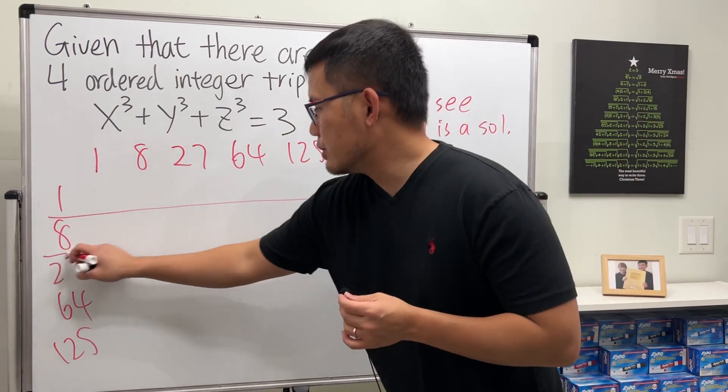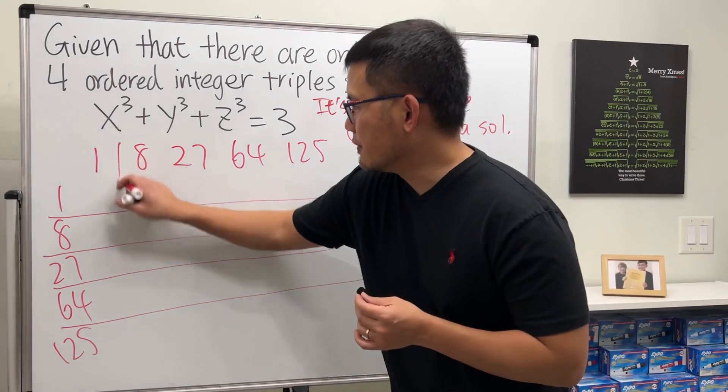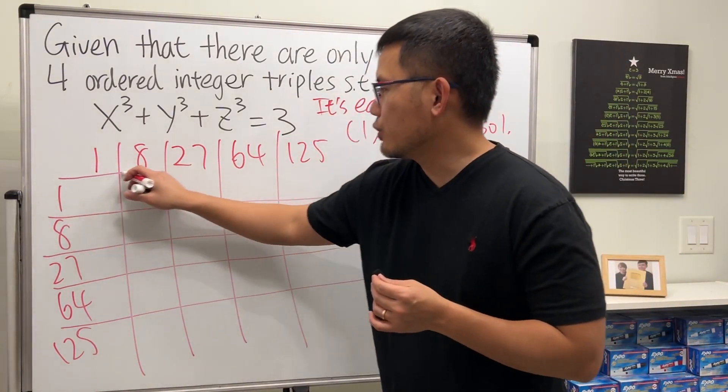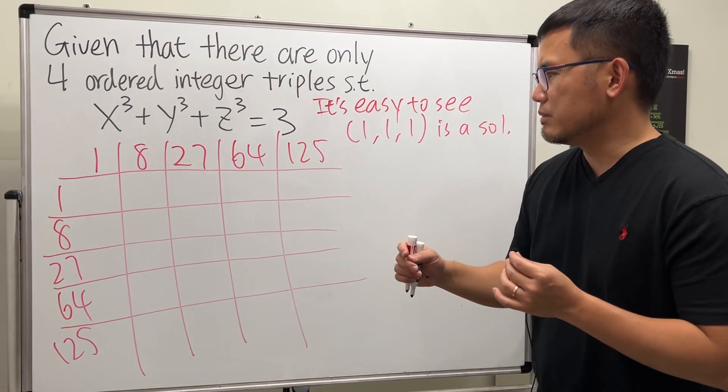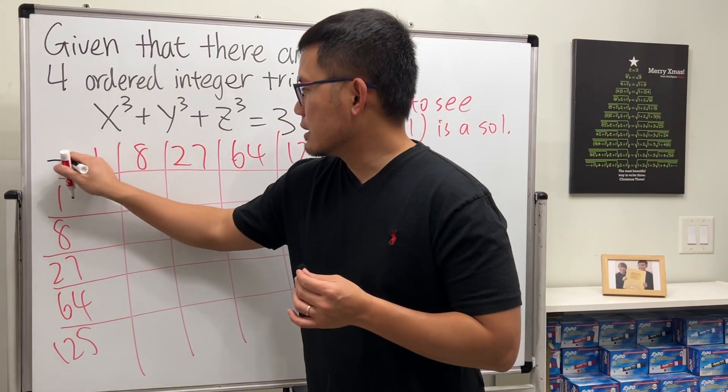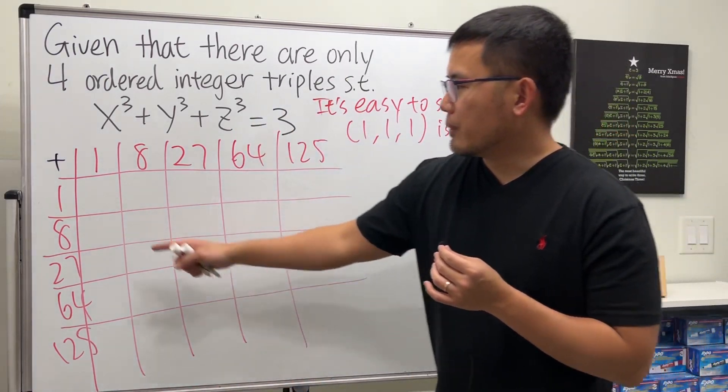And what I'm going to do is I'm just going to add them up and then try to see if I can find anything interesting. What's interesting is that we want to find the difference and pair things up and get 3, because that's 3. So the goal is that we are going to add. For example, we can do this,